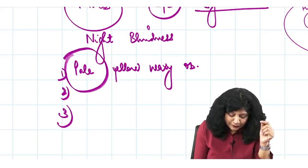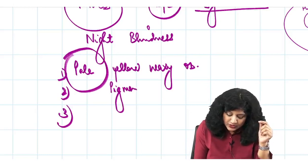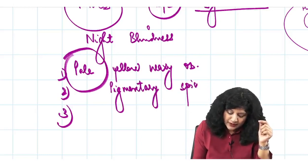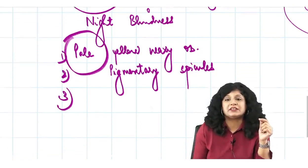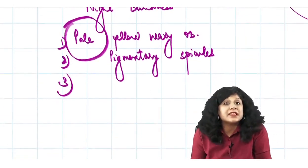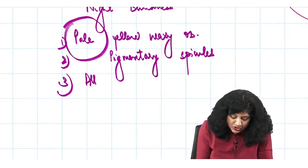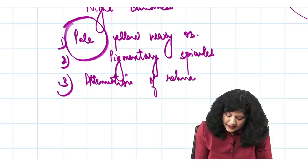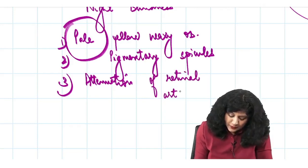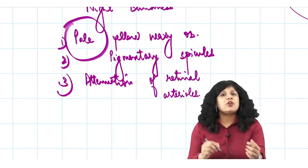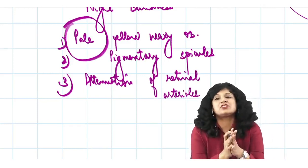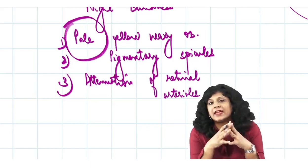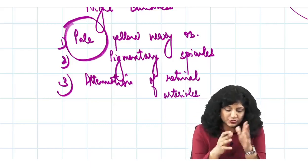The classic triad of retinitis pigmentosa includes: pale yellow waxy optic disc, pigmentary spicules, and attenuation of the retinal arterioles. None of these triad features are described in this case. So retinitis pigmentosa is ruled out.